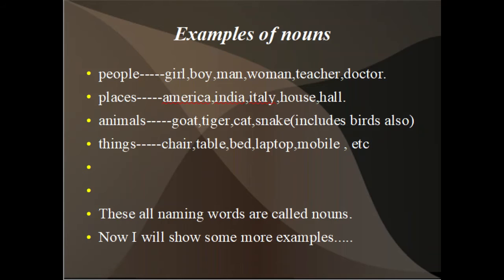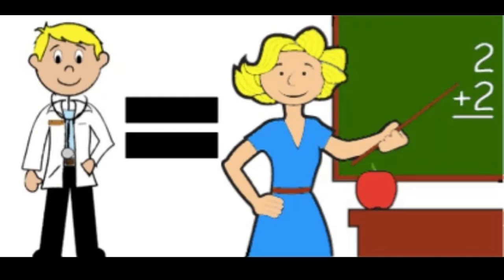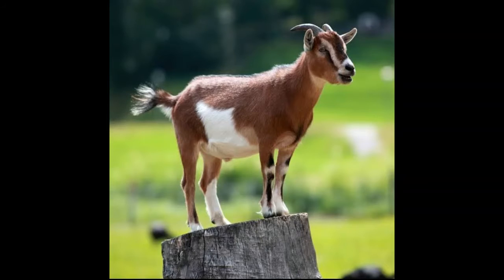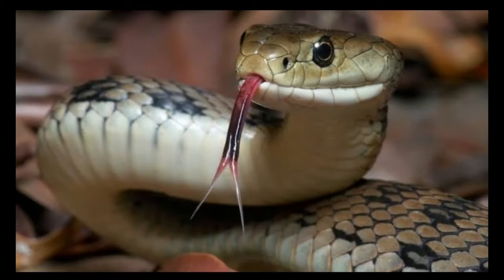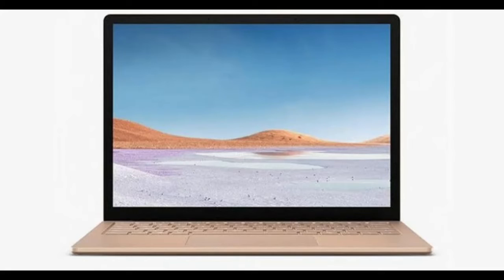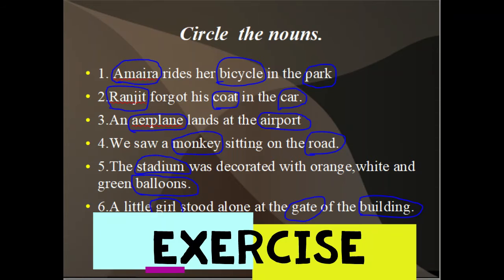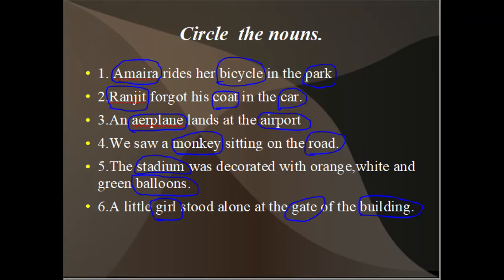Things include chair, table, bed, laptop, and mobile — all refer to things. So these naming words are referred to as nouns. Now I will show some exercise examples: circle the nouns.